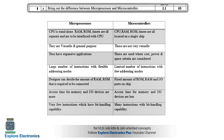We say the microprocessor is a versatile device and general-purpose. Versatile in the sense it will be adjusted to any kind of RAM or ROM you are going to connect externally. But the microcontroller is not versatile, because it has its own RAM and ROM and will be compatible with only that.